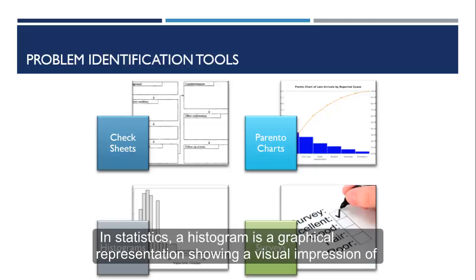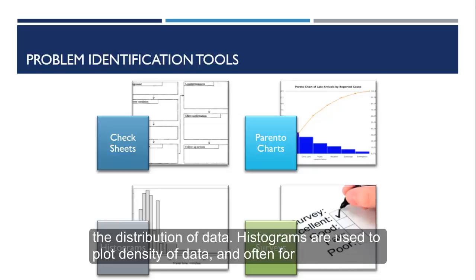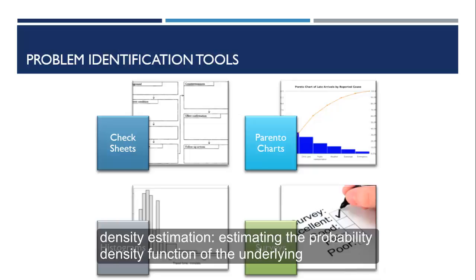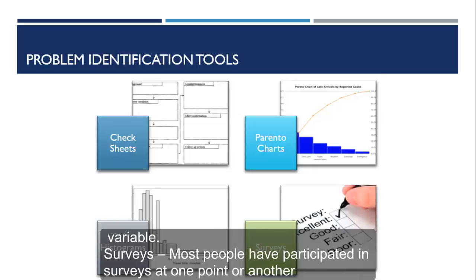Histograms. In statistics, a histogram is a graphical representation showing a visual impression of the distribution of data. Histograms are used to plot density of data and often for density estimation, estimating the probability density function of the underlying variable.